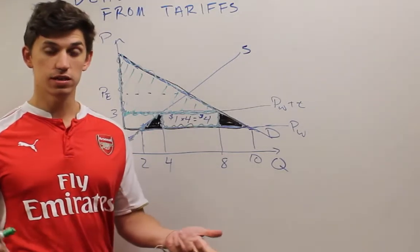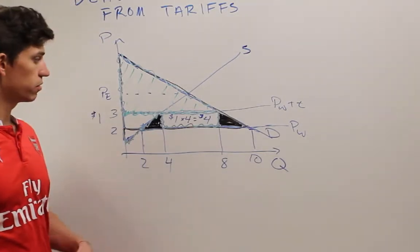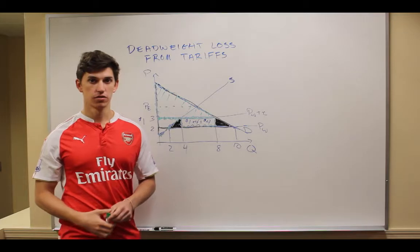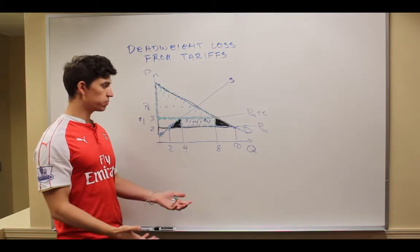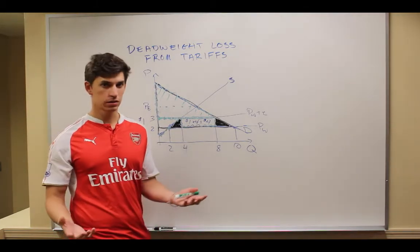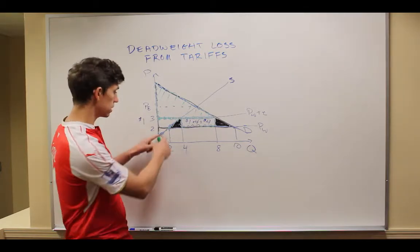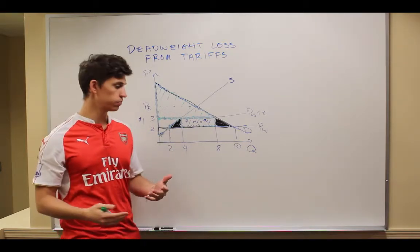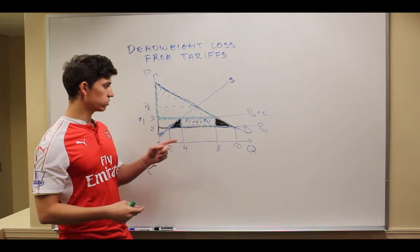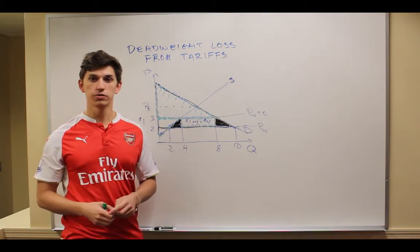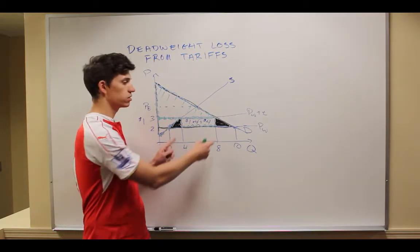And that's what the deadweight loss, or sometimes called the social welfare loss, from this tariff is. So even though maybe we put this tariff in place to protect domestic producers, because we did increase the producer's surplus, we had a net loss from the economy in doing so in the form of these two boxes here.